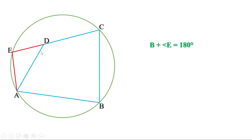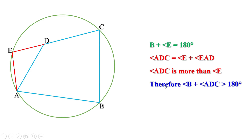Angle ADC is the exterior angle of triangle AED. Therefore, angle ADC equals angle E plus angle EAD. That means angle ADC is more than angle E. Therefore, if we replace angle E by angle ADC, the sum is more than 180 degrees. That means angle B plus angle ADC is more than 180 degrees. So if one vertex of a quadrilateral is inside the circle drawn through the other three vertices, the sum of the angles at this vertex and the opposite vertex is more than 180 degrees.